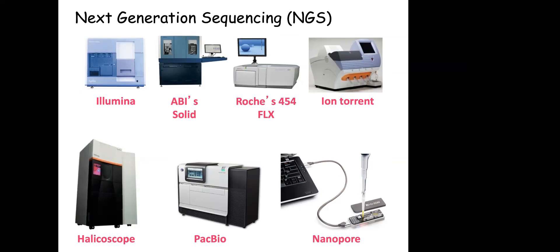Illumina was the major player at that time — it was originally Solexa — and was producing 36-nucleotide short reads. Now Illumina is producing reads of more than 1 kilobase. These sequencing technologies produce high-throughput data at low cost and in much less time compared to Sanger sequencing.